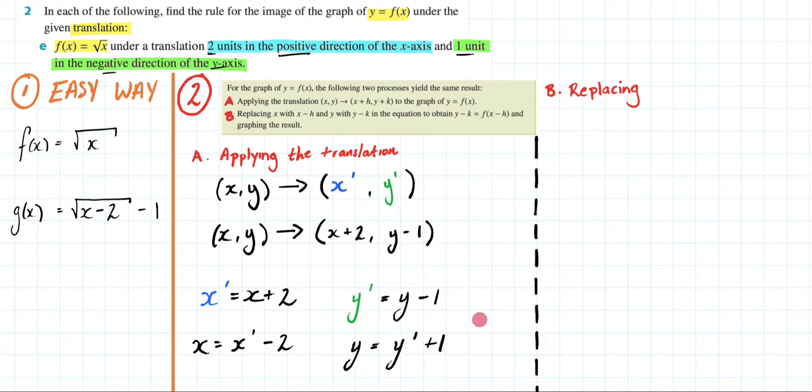With these now I can arrive at what my new graph is going to look like. So let's first write down what my original graph is which is f(x) equals the square root of x. And because y equals f(x) I can write y equals the square root of x.